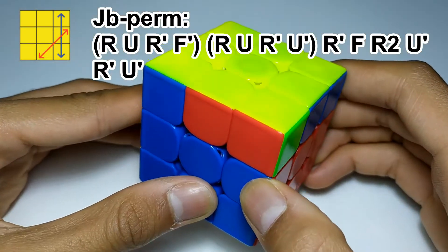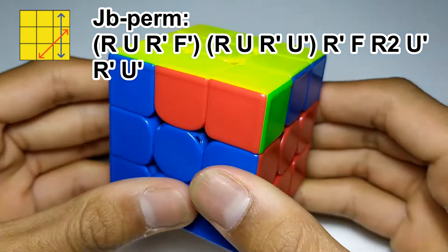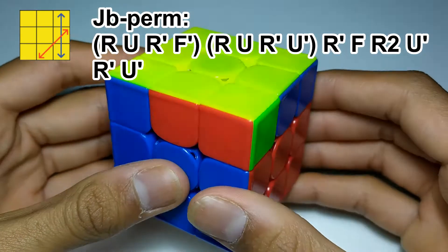So, the first algorithm that I'm going to show is the JB-perm. You can see up here that the JB-perm is just the T-perm with the last 4 moves moved to the beginning.